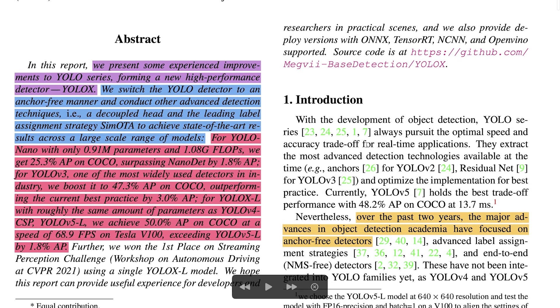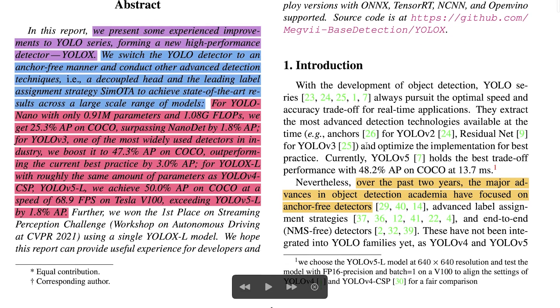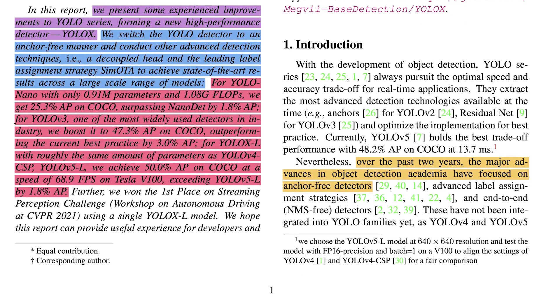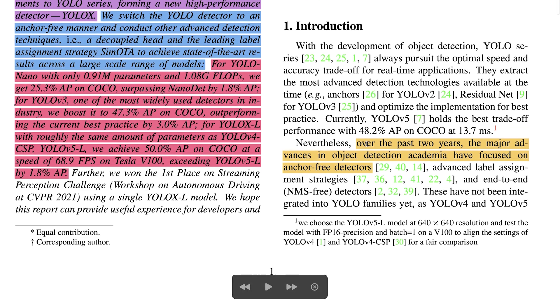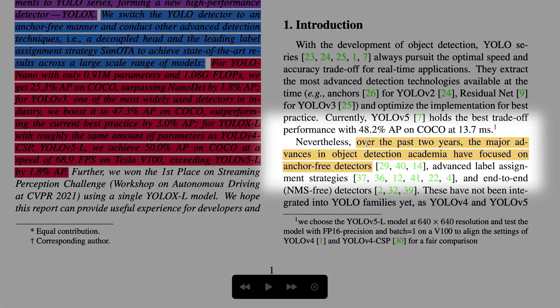Now in the introduction, they are explaining the objective of this research. They are saying that over the past two years, there has been some major advancements happening in the object detection domain. Many researchers have focused on anchor-free detectors and used advanced label assignment strategies and worked on making end-to-end NMS-free detectors. But these advancements have never been integrated in the YOLO families.